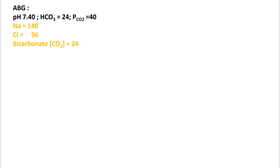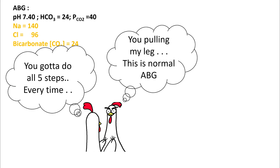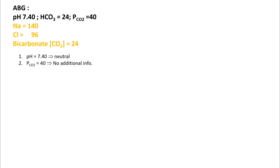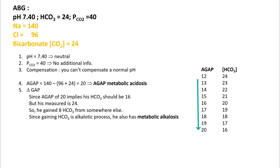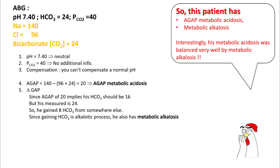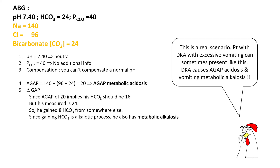Here is a tricky ABG: pH 7.4, bicarb 24, pCO2 40. You must still perform all five steps. pH is 7.4 — neutral. pCO2 is 40 — normal. No compensation needed since pH is normal. However, the anion gap is 20, indicating anion gap metabolic acidosis. For an anion gap of 20, bicarb should be 16, but measured bicarb is 24 — gained 8 bicarb from somewhere else, meaning a hidden metabolic alkalosis. So this patient — despite a completely normal-looking ABG — has both anion gap metabolic acidosis and metabolic alkalosis. This occurs, for example, in DKA with excessive vomiting: DKA causes anion gap acidosis and vomiting causes metabolic alkalosis, balancing to a near-normal ABG.